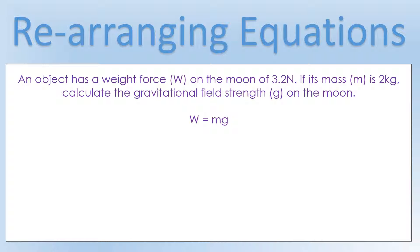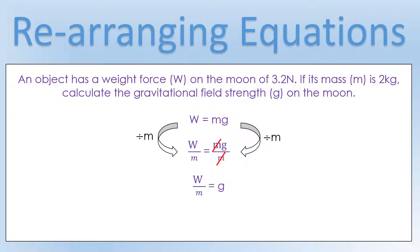Let's see this in operation with real equations. An object has a weight force on the moon of 3.2 newtons and a mass of 2 kilograms — calculate the gravitational field strength on the moon. The equation is: weight force equals mass times gravitational field strength. Is gravitational field strength on the bottom line? No. What operator is acting on it? It's being multiplied by mass, so we divide both sides by mass. The masses cancel, giving gravitational field strength equals weight divided by mass. Plugging in: 3.2 newtons divided by 2 kilograms equals 1.6 newtons per kilogram — considerably weaker than Earth's value of about 10.